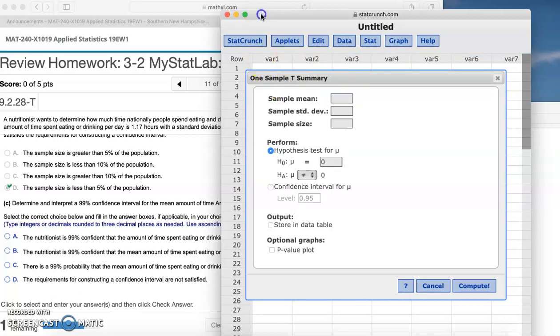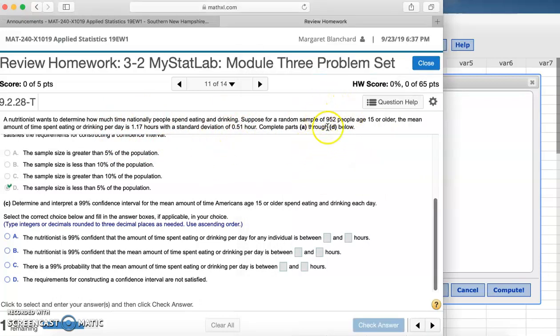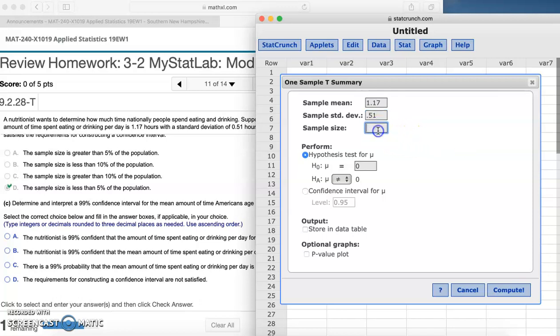So if we go back to our problem, we're given that the mean right here is 1.17. And our standard deviation is 0.51. Our sample size right here is 952, so we put that in, 952.